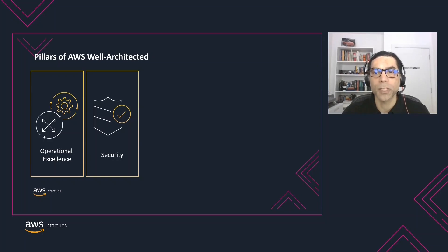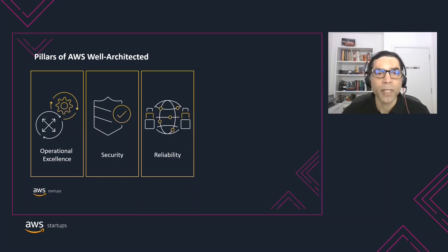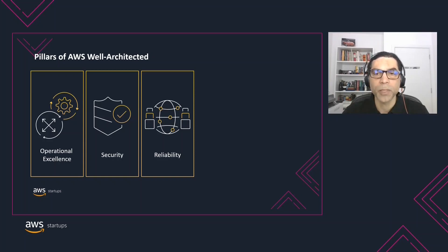The Security Pillar also covers establishing controls to detect security events. The Reliability Pillar focuses on ensuring a workload performs its intended function correctly and consistently when it's expected to. A resilient workload quickly recovers from failures to meet business and customer demand. Key topics include distributed system design, recovery planning, and how to handle change.